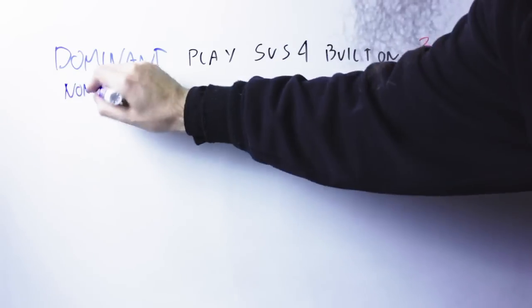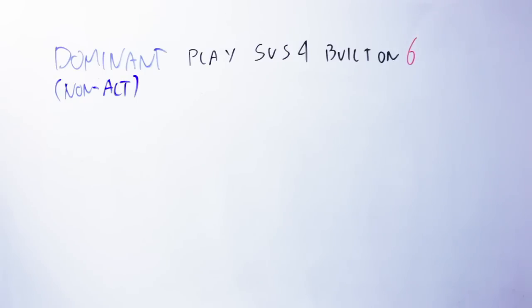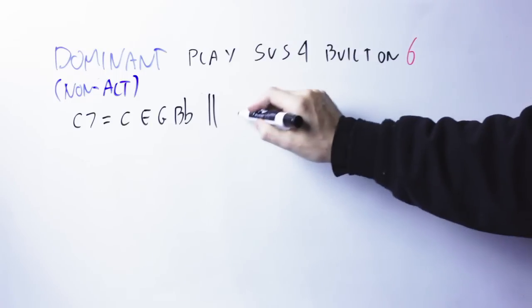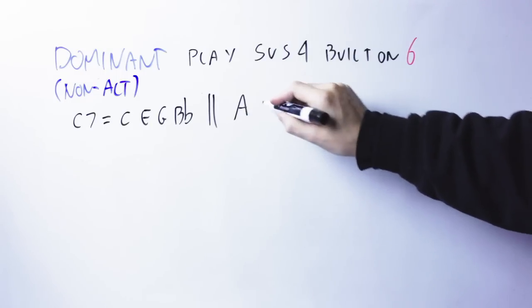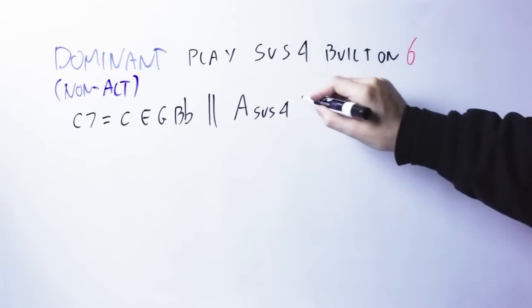If the dominant chord instead is not altered, you will build the suspended fourth chord on the major sixth of the chord. So, if you have a C7, and you expect this to be not altered, then you will take the major sixth, which is A, and play on top the A suspended fourth, made by the notes A, D, and E.